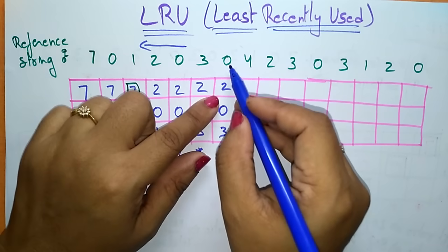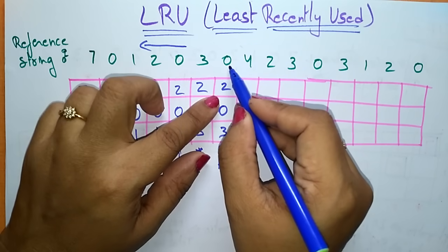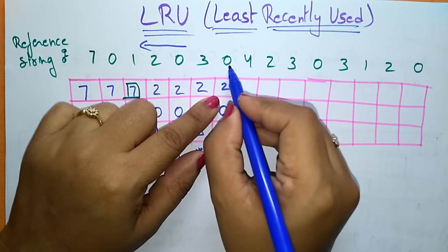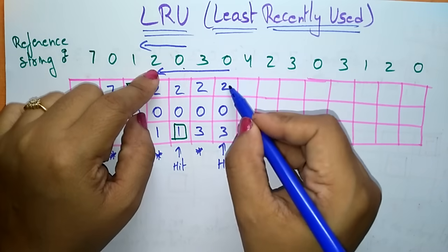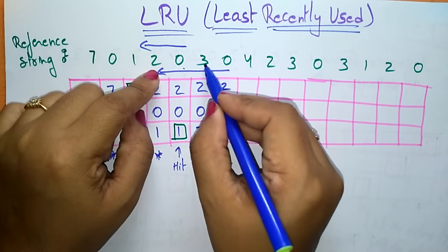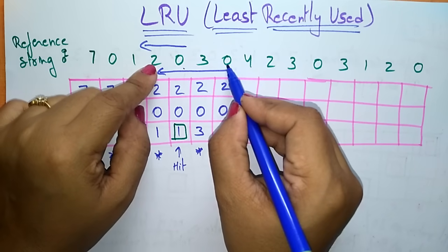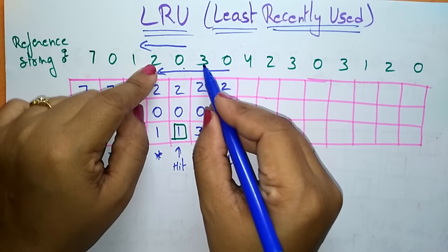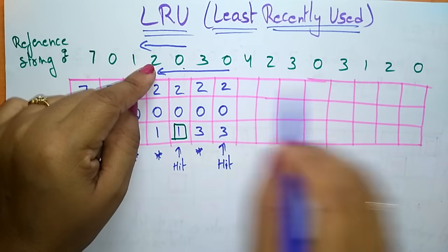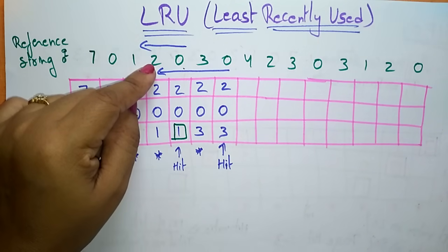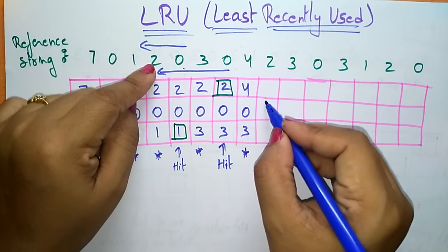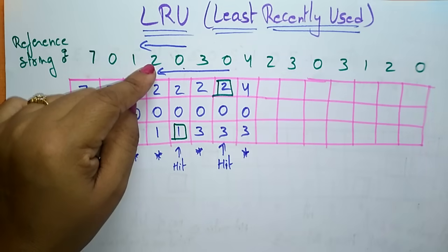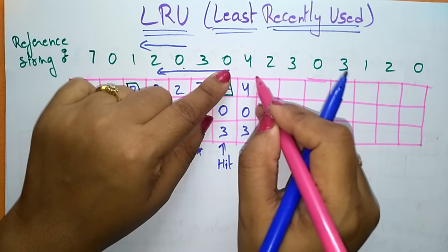Where do I place page 4? Check the least recently used. Looking at the access order for frames 2, 0, 3: 0 is most recently used, then 3, and 2 is the least recently used. So I replace 2 with 4, giving frames: 4, 0, 3. This is a page fault. Now I have to place 2 — check which is least recently used among 4, 0, 3.